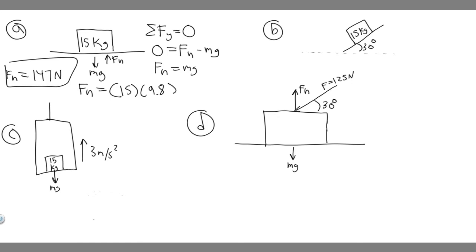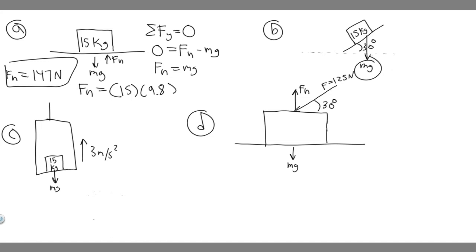Now let's move on to B. The only thing changing is the surface is now at an angle. Think about the forces acting on the block. The force due to gravity doesn't act along the surface — gravity still acts straight downward. The normal force is always perpendicular to the surface the object touches, so it still points straight up from the tilted surface.